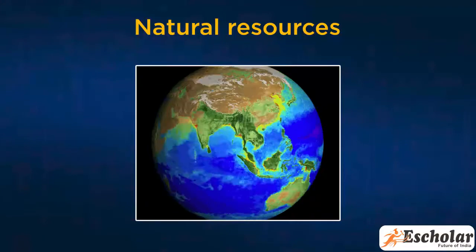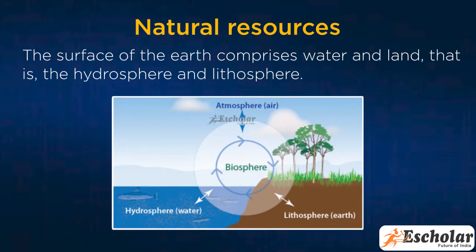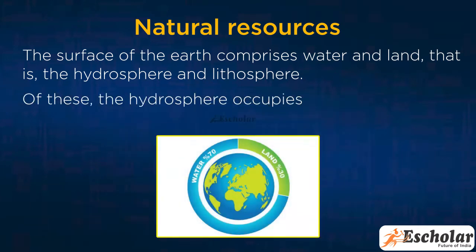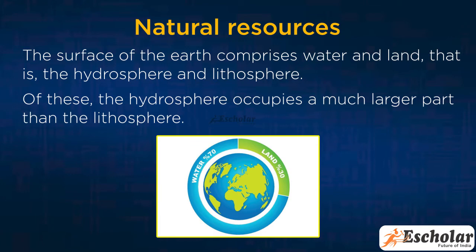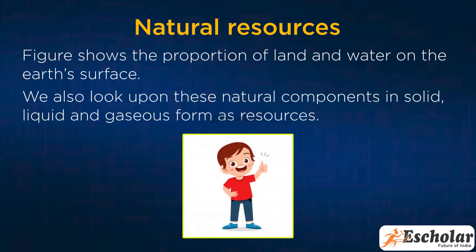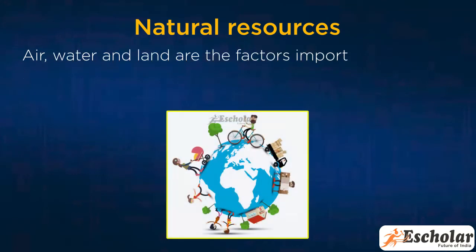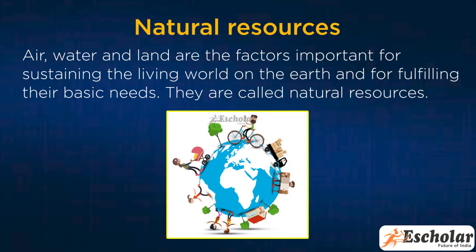These spheres have formed on the earth naturally. The atmosphere is the layer of air that surrounds the earth. The surface of the earth comprises water and land, that is, the hydrosphere and lithosphere. Of these, the hydrosphere occupies a much larger part than the lithosphere. A figure shows the proportion of land and water on the earth's surface. We also look upon these natural components in solid, liquid, and gaseous form as resources. In other words, we use them to fulfill our requirements. Air, water, and land are the factors important for sustaining the living world on the earth and for fulfilling their basic needs. They are called natural resources.